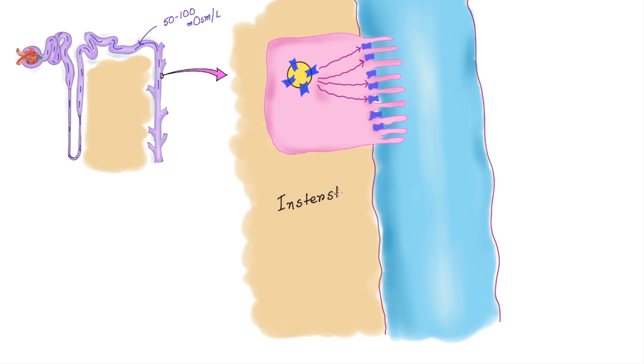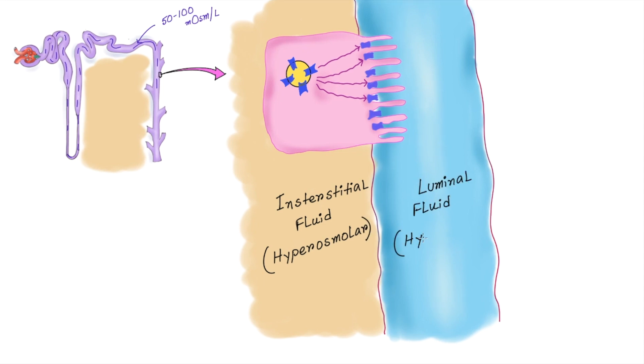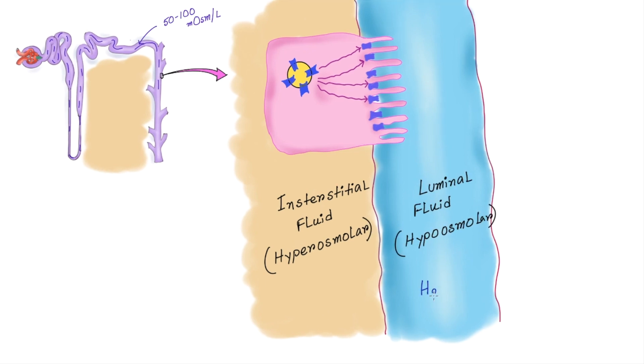Now listen carefully. The interstitial fluid here is hyperosmolar but the luminal fluid is hypoosmolar. So the direction of the water will be from here to here which means water is reabsorbed back to the interstitial fluid from luminal fluid in the presence of ADH.